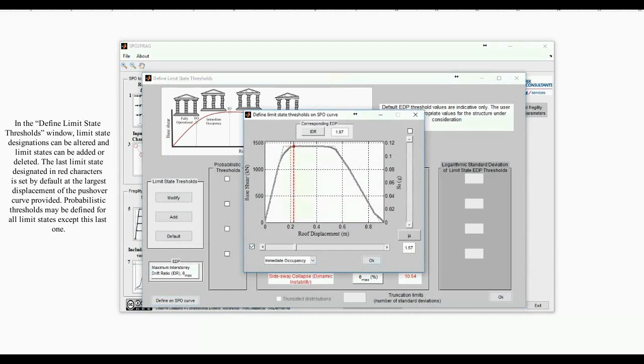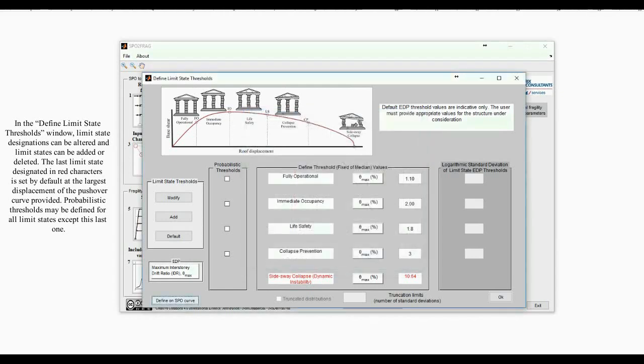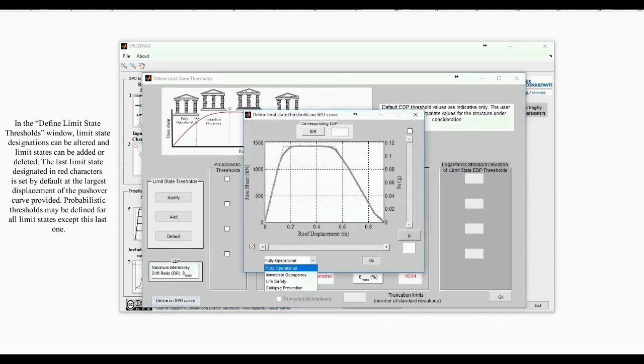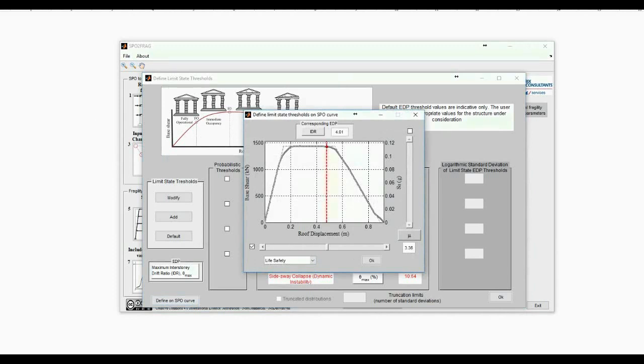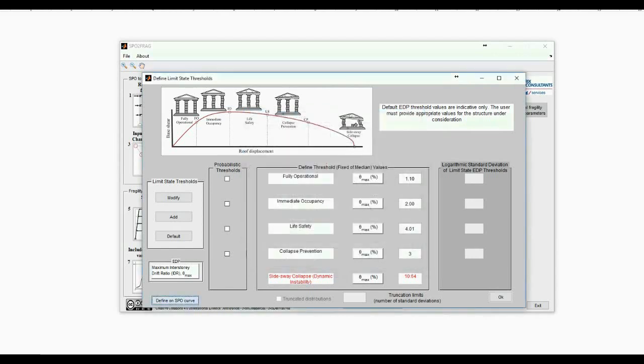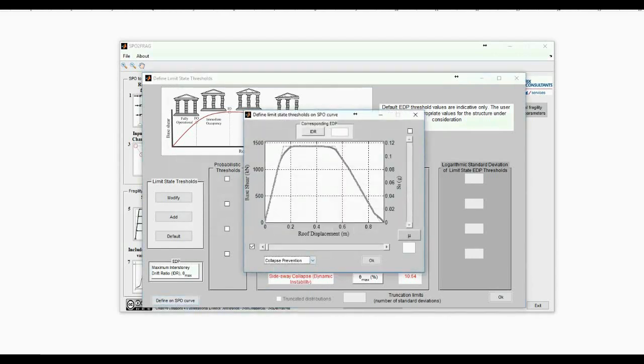For the life safety threshold, we move towards the end of the plateau at 4% interstory drift. For the collapse prevention limit state, we choose a threshold defined by a 50% loss of lateral resistance on the pushover curve, which corresponds to an interstory drift of around 7.5%.